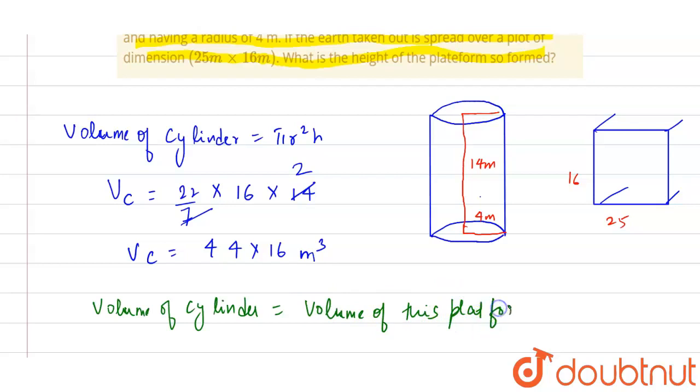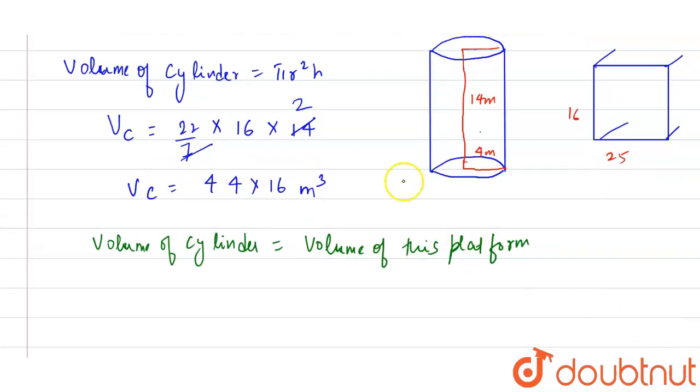The platform is in the shape of a cuboid, so volume equals length multiply by breadth multiply by height. The volume of cylinder is 44 multiply by 16, so the volume of this platform equals 16 multiply by 25 multiply by h meter.